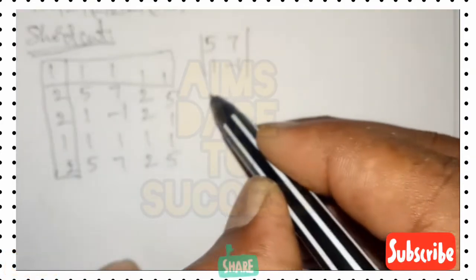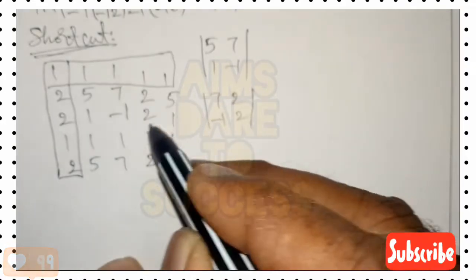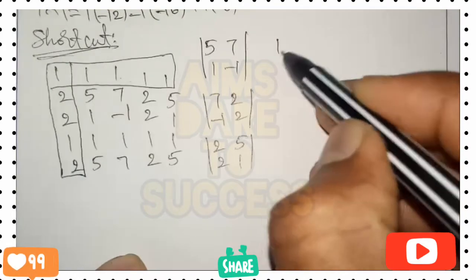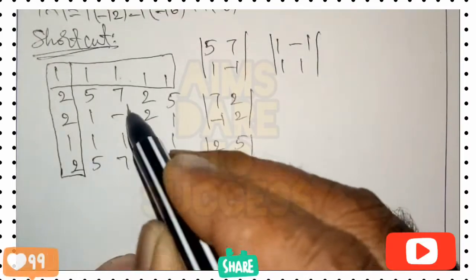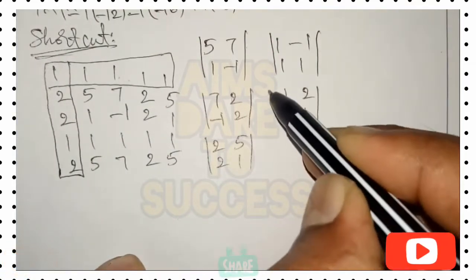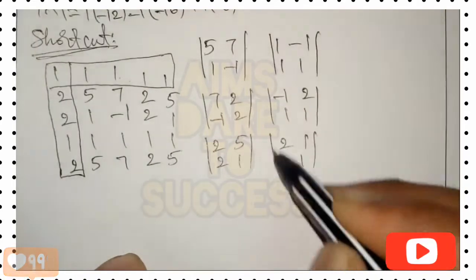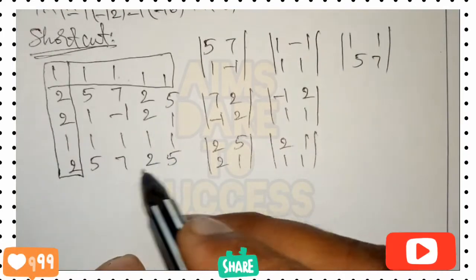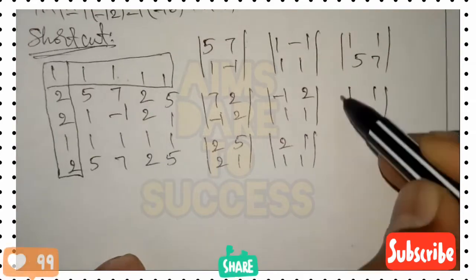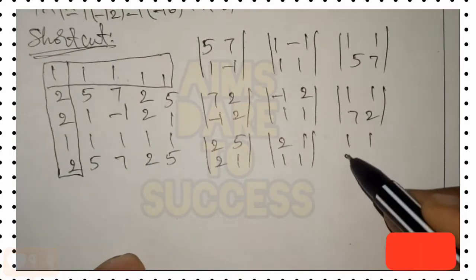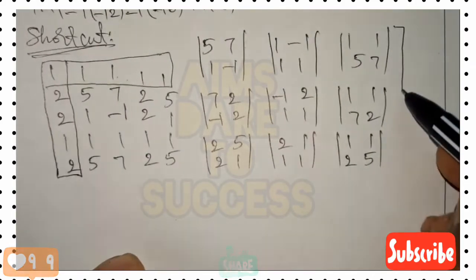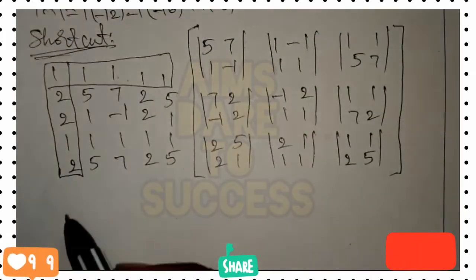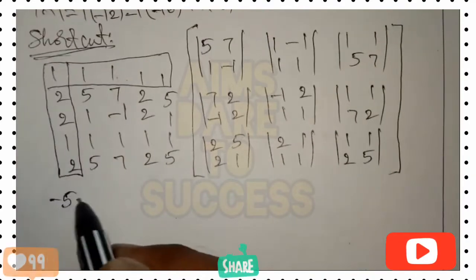For the first column of the cofactor matrix, considering rows 1 and 2: values are 5, 7, 1, -1 and then 7, 2, -1, 2. For the second column, considering rows 2 and 3: values are 1, -1, 1, 1 and 1, 1, -1, 2, and 1, 1. For the third column, rows 3 and 4: values are 1, 1, 5, 7 and 2, 1, 1, 1, then 1, 7, 2 and finally 1, 1, 2, 5. This applies the transpose concept — interchanging rows and columns.